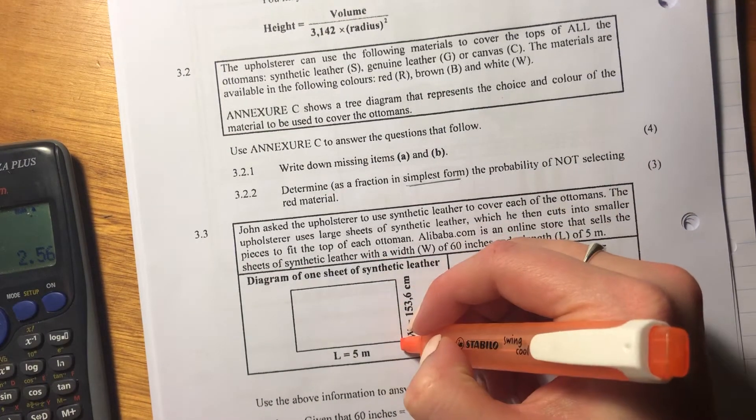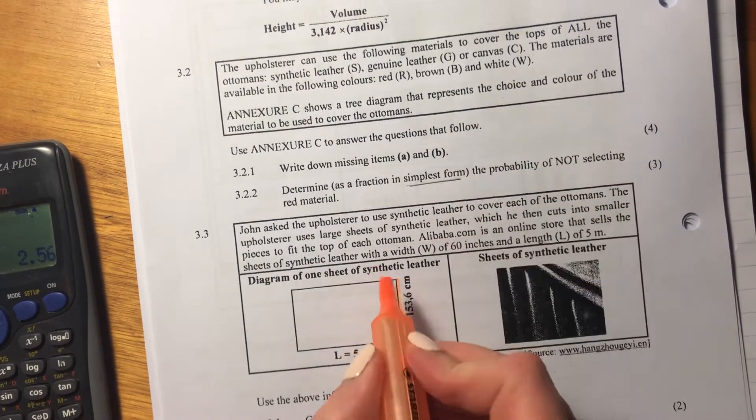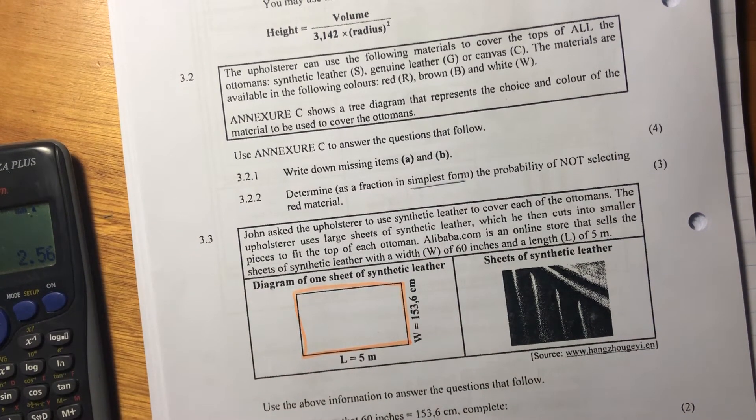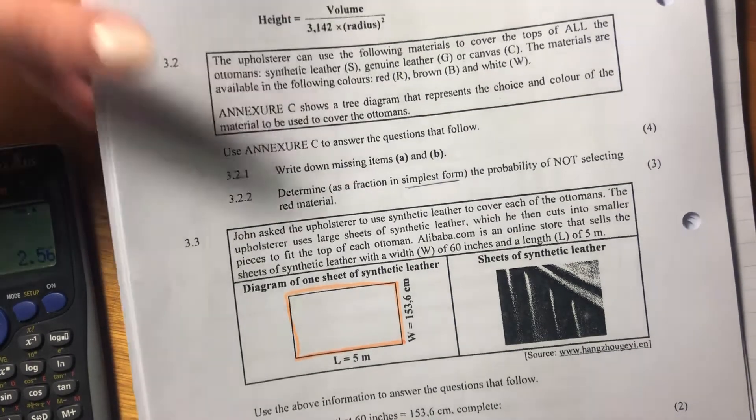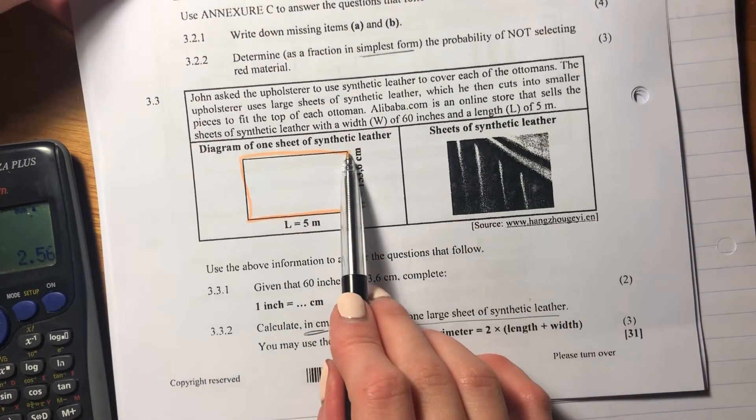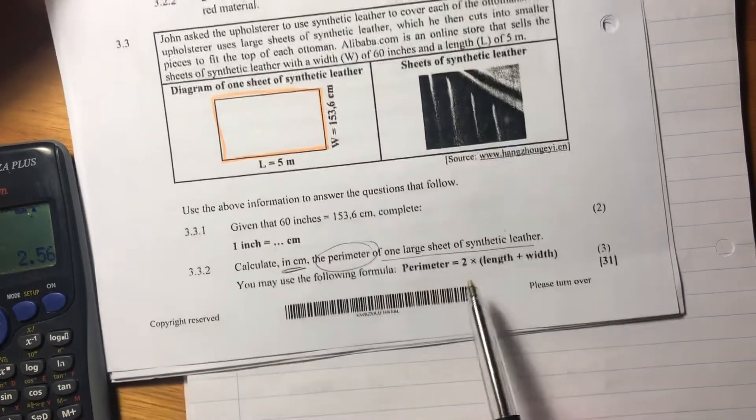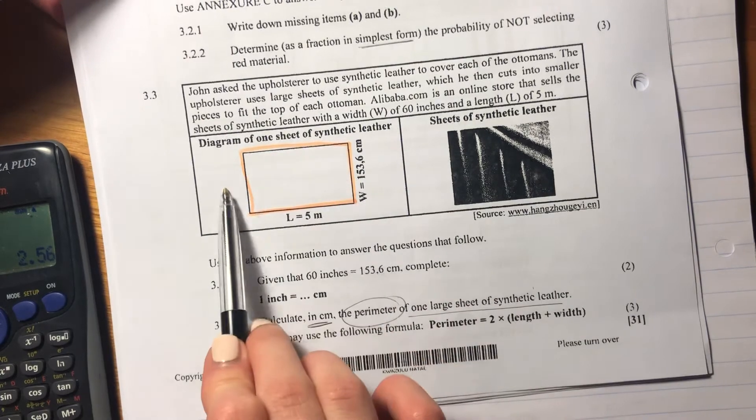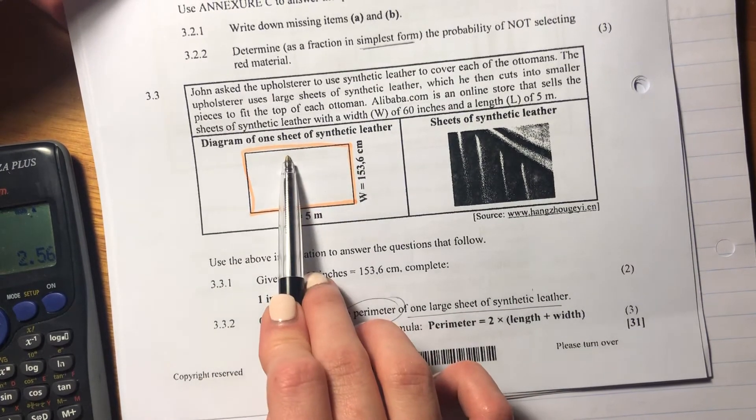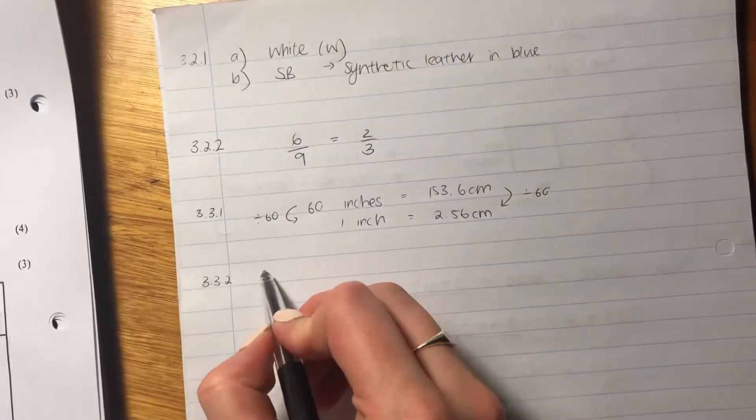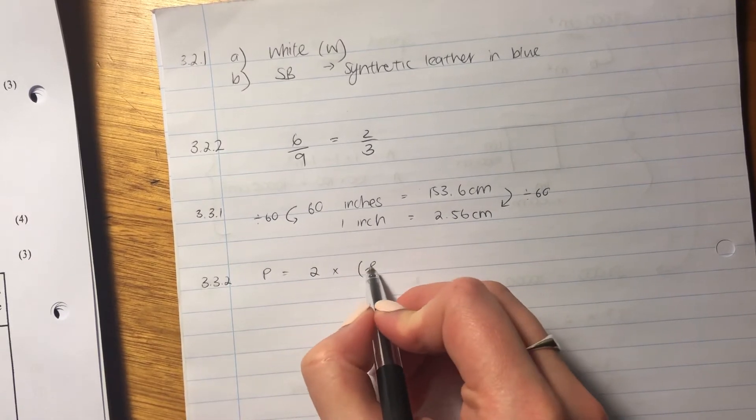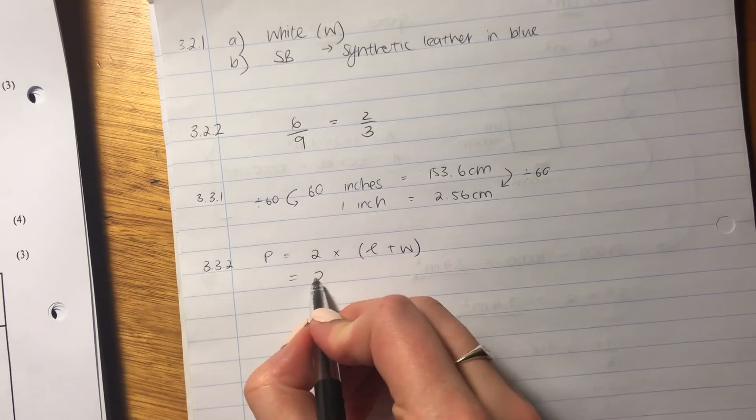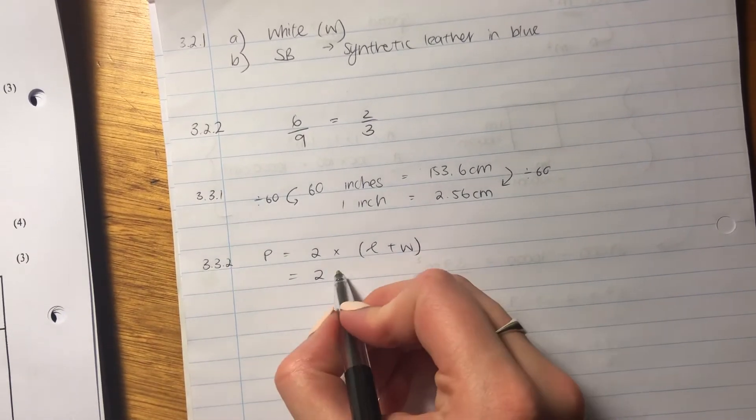It means that if I stand here and I'm an ant and I walk the whole way along the sheet and end back where I started, how far have I walked? So it would be this width plus that length plus this width plus that length. And that's why we just say 2 times length plus width because we walk 2 widths and 2 lengths. So we know that perimeter equals 2 times length plus width. That's what they've given us.